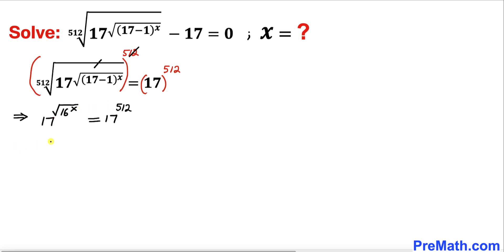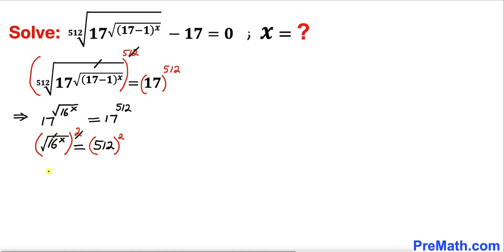Therefore we can write 16 power x the square root equals 512. Now let's undo this square root by taking a square on both sides. On the left hand side, the square and square root undo each other, so we get 16 power x equal to 512 whole square.